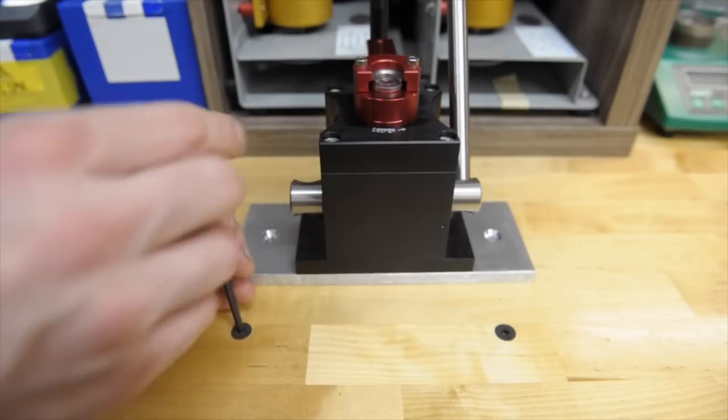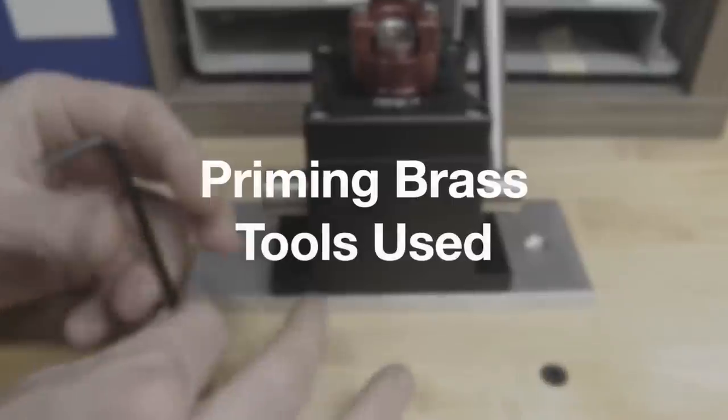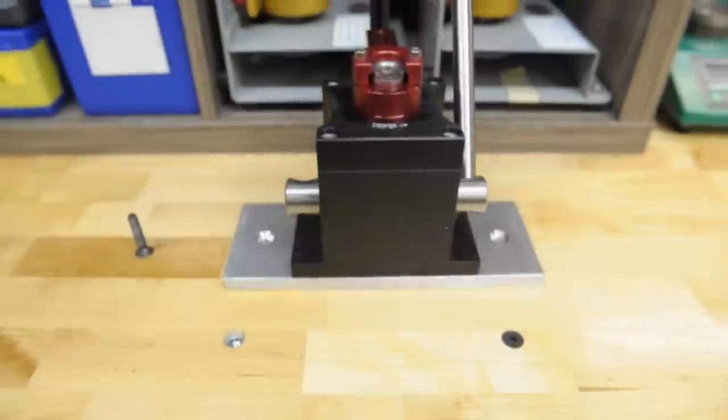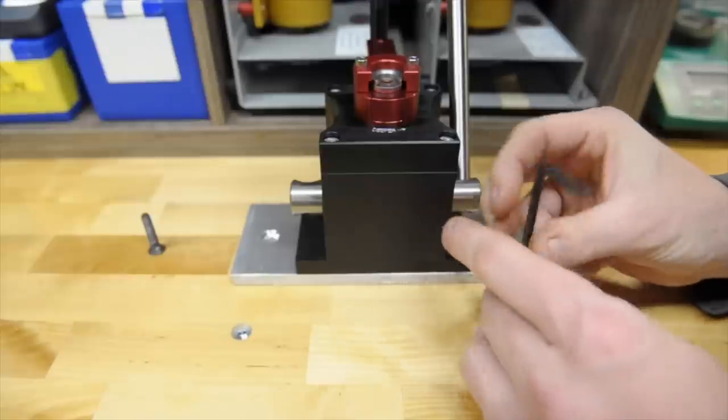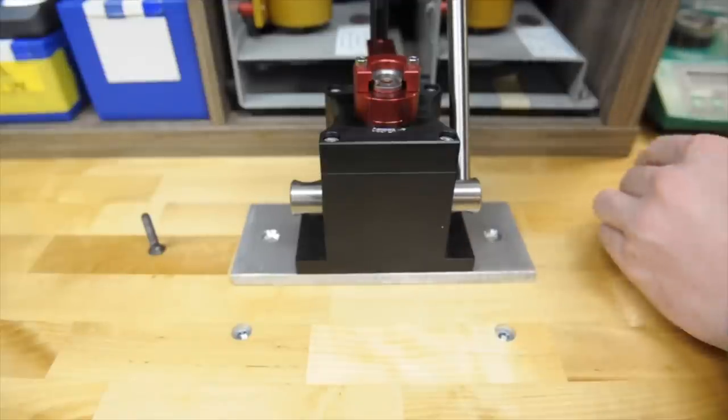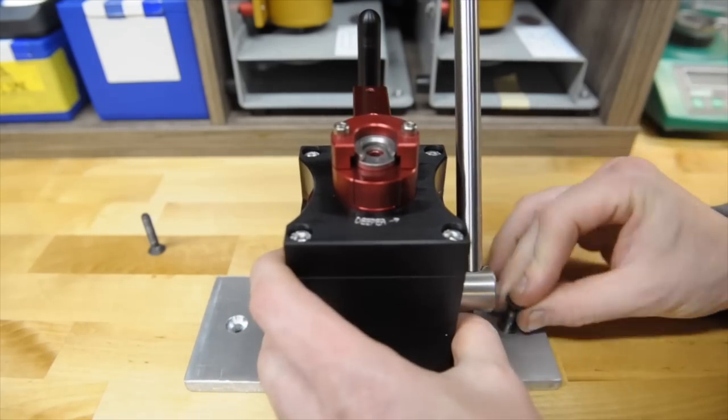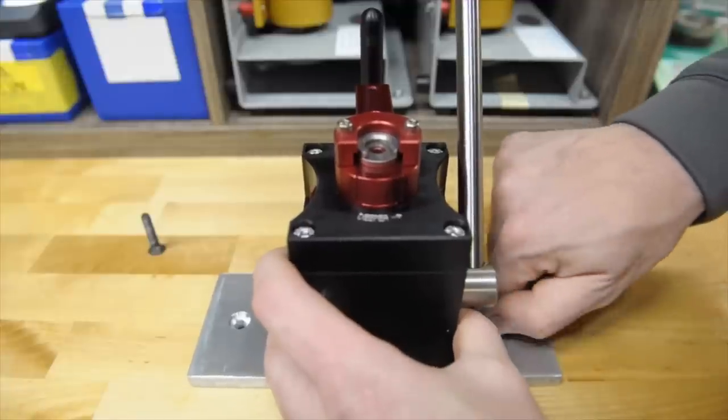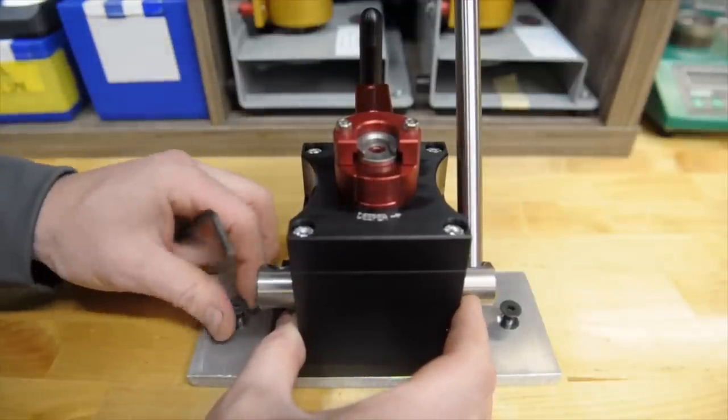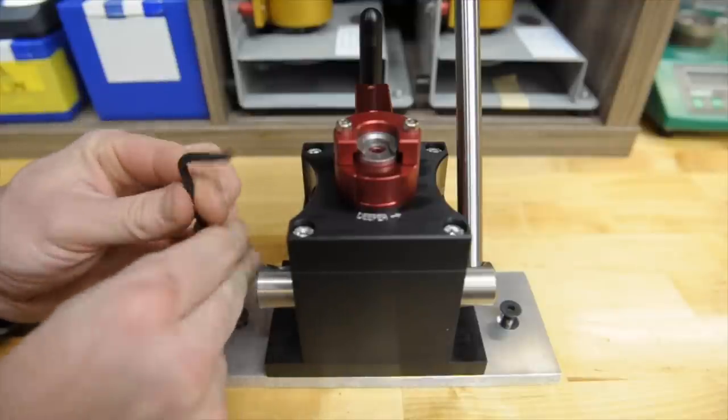So now you need to prime your brass. We're going to get into priming tools, what's available, what you can get, what's necessary. For this video, basically just what you need to get the job done. A lot of people, still advanced shooters, use something as simple as an RCBS hand primer.